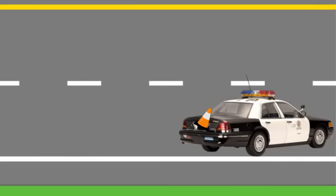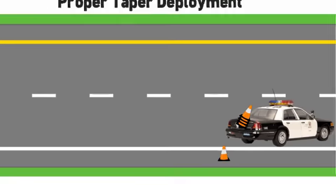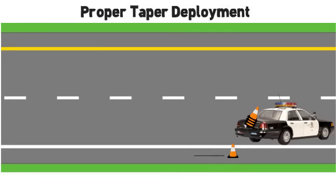The responder retrieves available cones from the trunk, placing one at the rear of the responder vehicle on the edge line. Walking along the shoulder, facing traffic, a cone is subsequently placed on the edge line at each skip line.